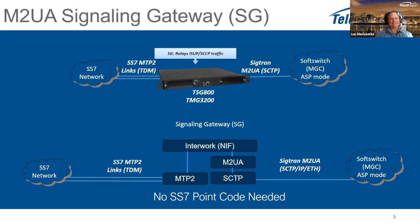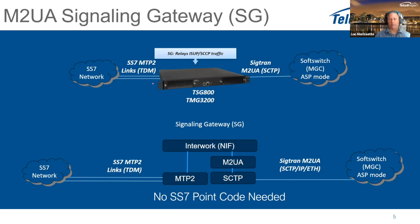Looking at the signaling gateway function, you have the traditional SS7 network built over TDM links. Multiple TDM links can be on one T1 or multiple T1s. You can have one MTP2 link on one T1, two on one T1, or distributed across different T1s as needed. For T1s, you can have up to 24 MTP2 links on one T1.